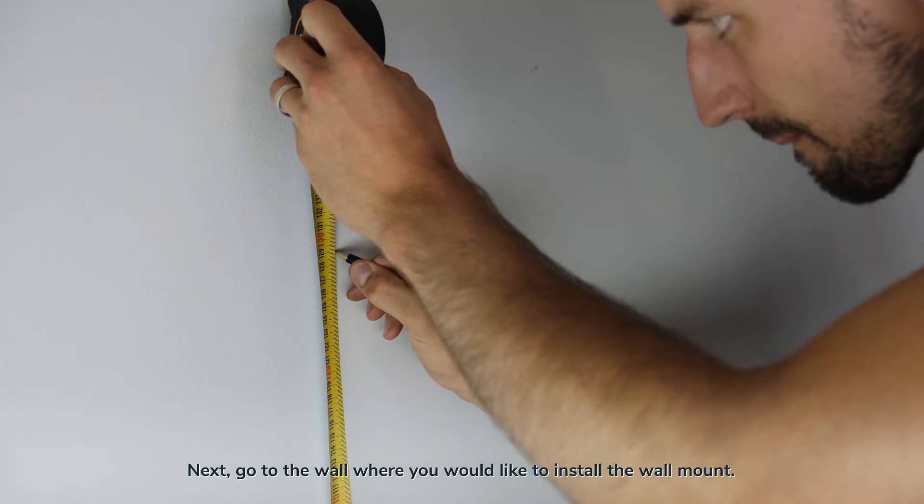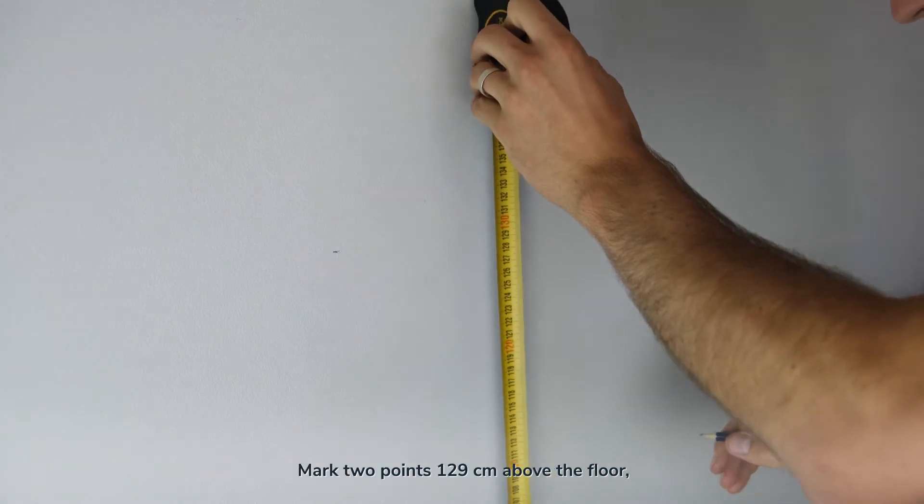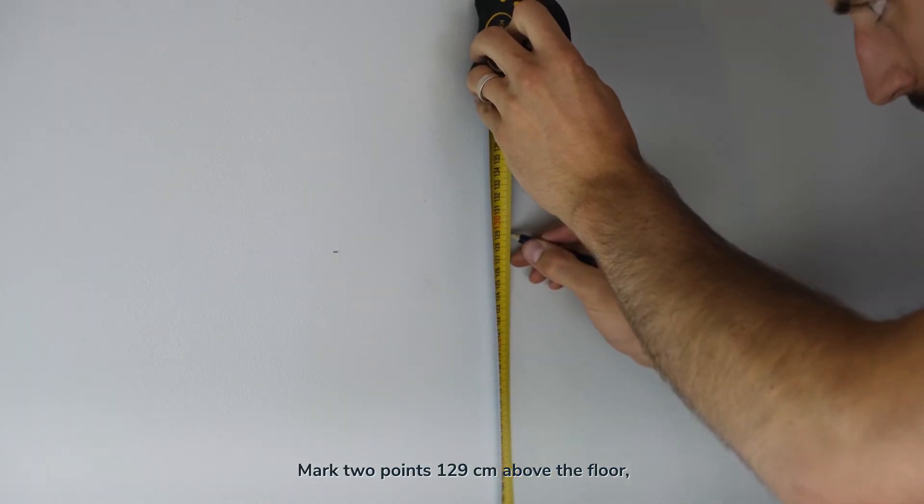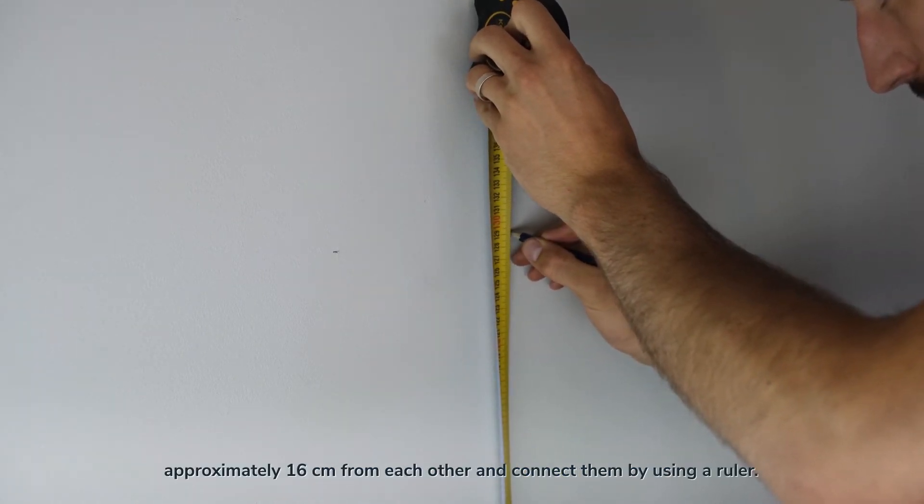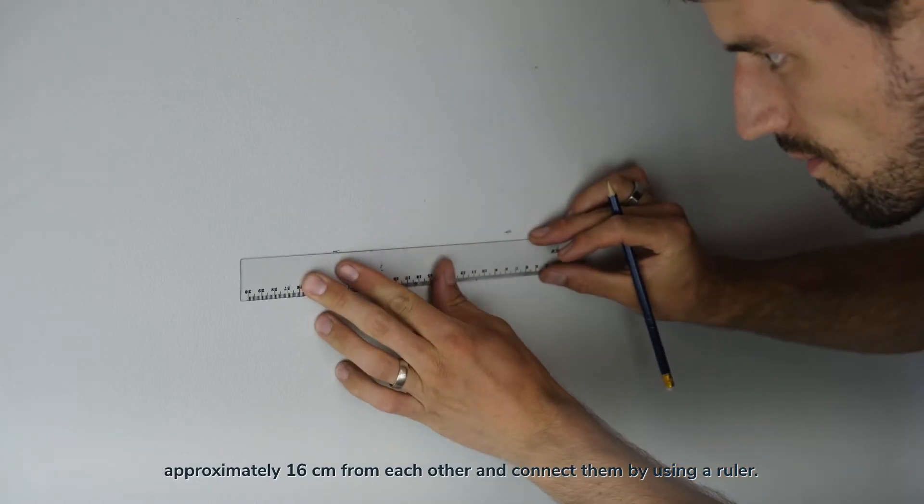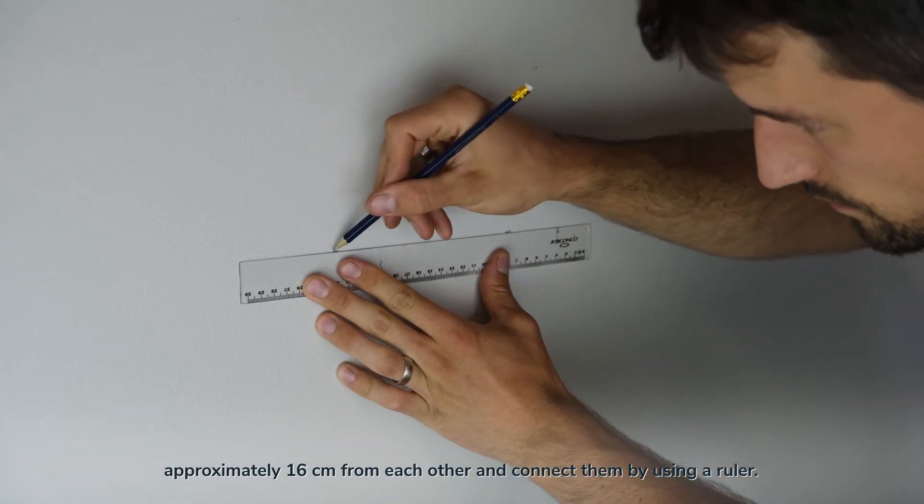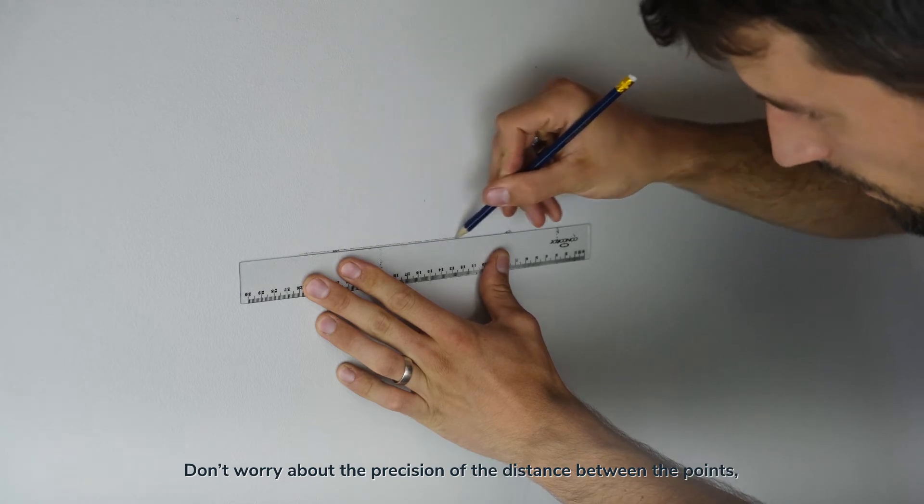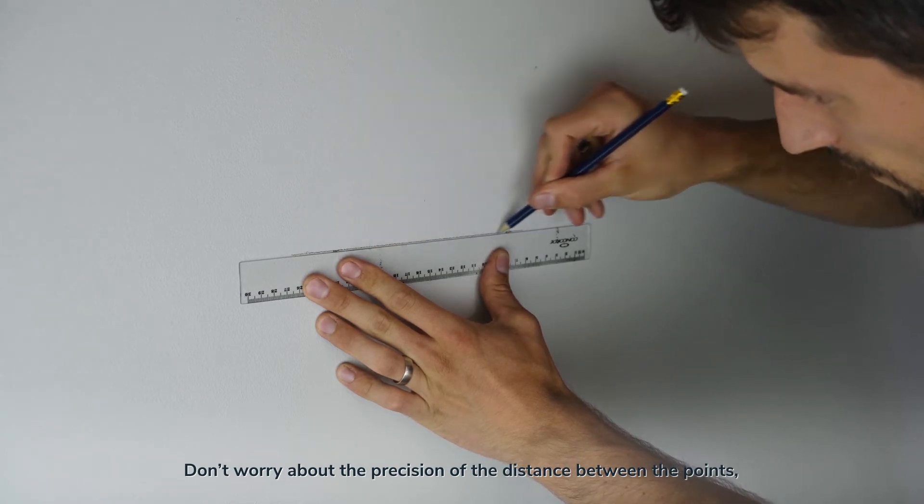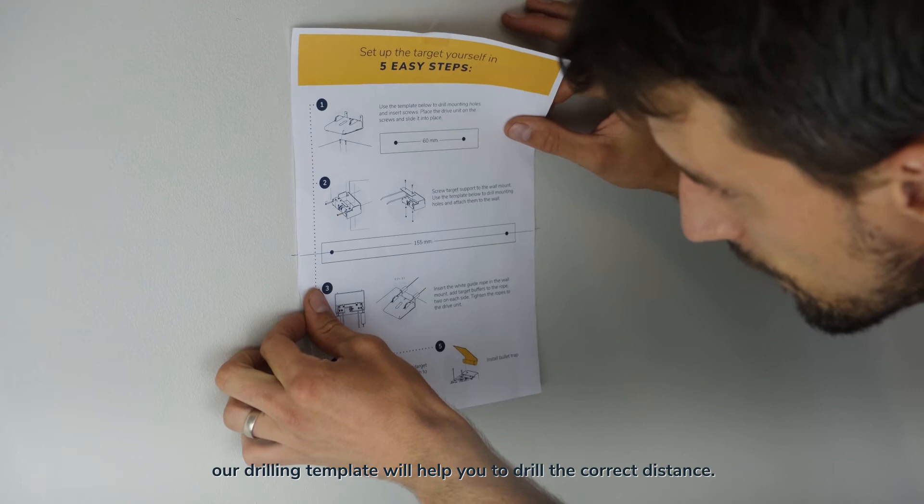Next, go to the wall where you would like to install the wall mount. Mark two points 129cm above the floor, approximately 16cm from each other, and connect them by using a ruler. Do not worry about the precision of the distance between the points. Our drilling template will help you to drill the correct distance.